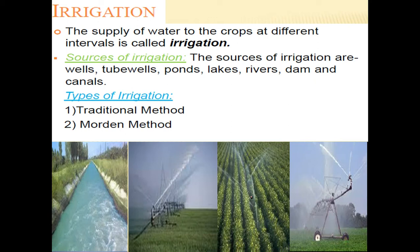The sources of irrigation could be various, like wells, ponds, lakes, rivers, dams, or canals. There are different methods by which irrigation is done. The first method is called the traditional method and the second is called modern methods. You can see images showing how irrigation can be done.